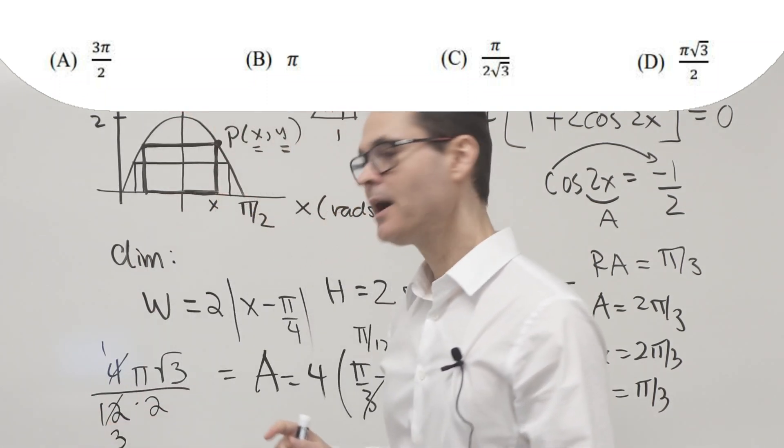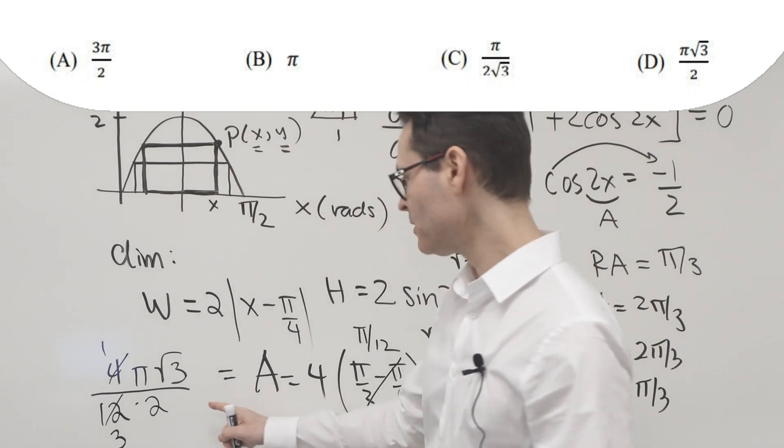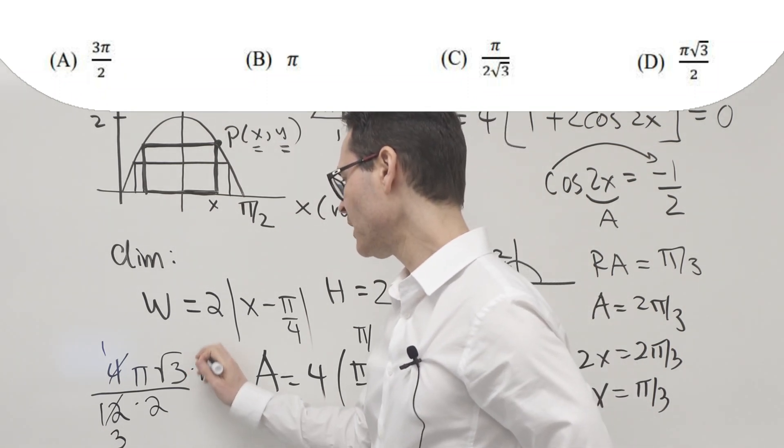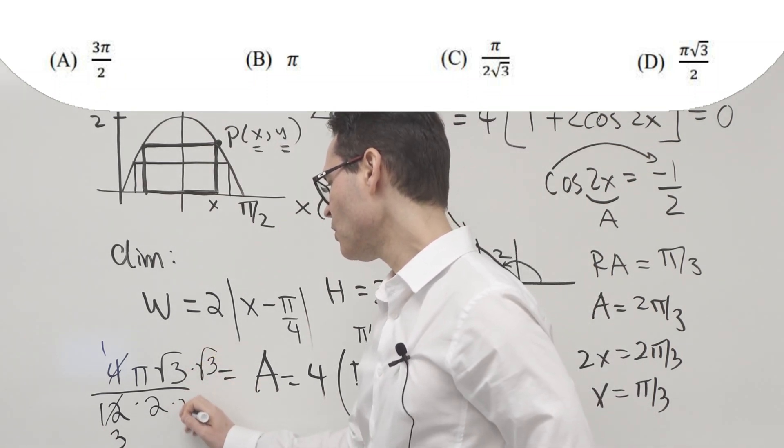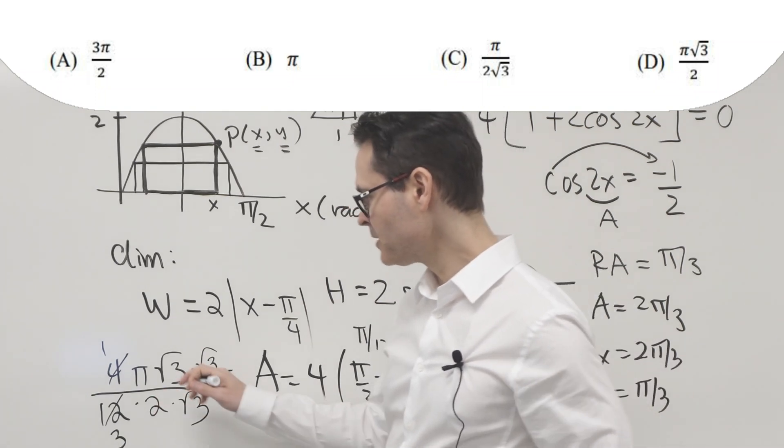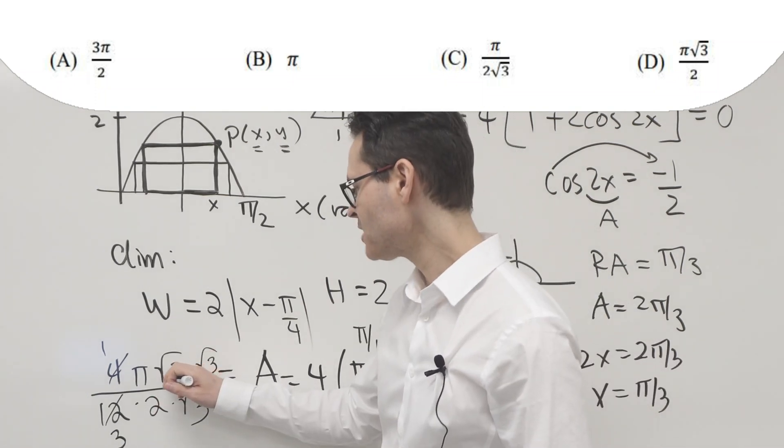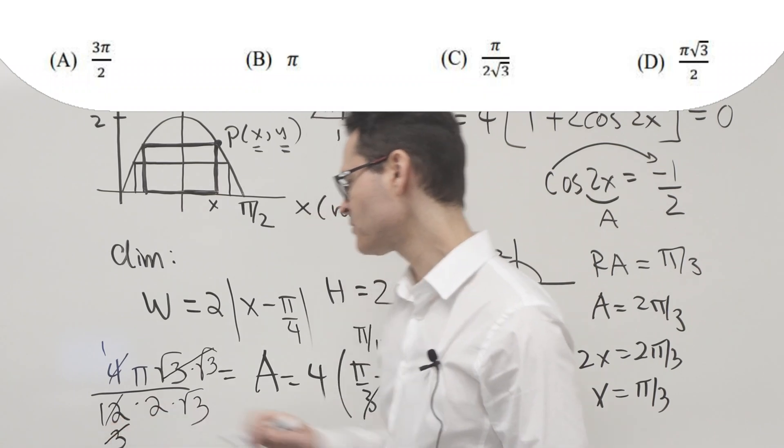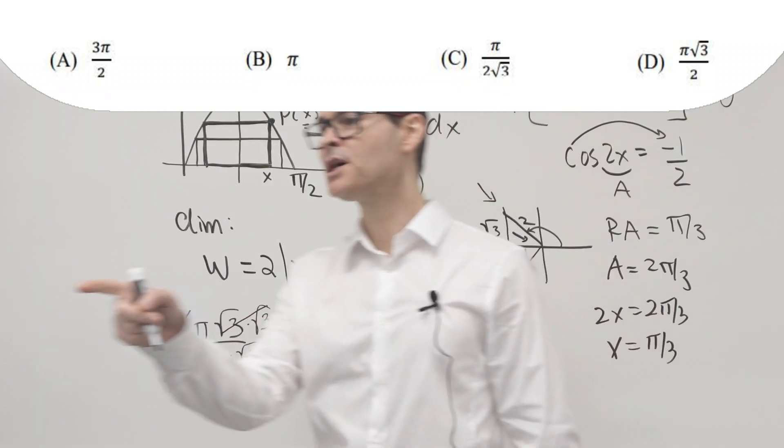Ah, I know what they've done. They've put the radical downstairs. So I'm going to multiply by root three over root three. That's kind of mean-spirited, but anyway. So root three times root three is three over three, and then I'm able to generate the answer.